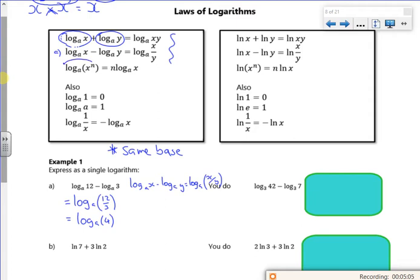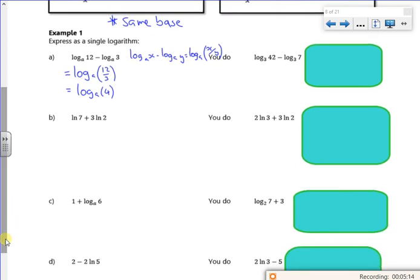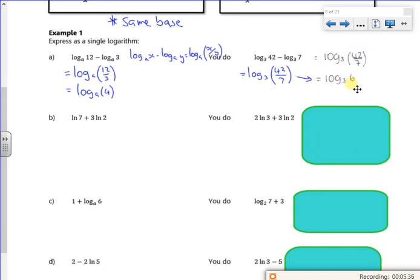I've got one with a power, and if you look, the power goes at the front. So you've got one here, one to do. So they're the same base, so that's okay. They're a minus, so if they're a minus, I combine them. Log to base 3 of 42 over 7. And that should give us 6. Log to base 3 of 6.